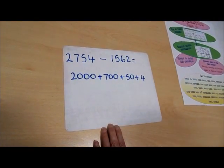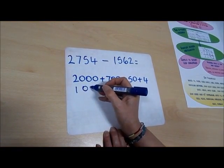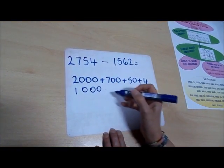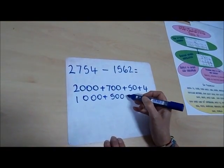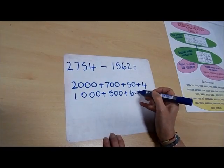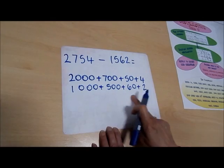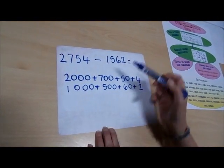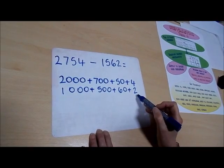We're going to do the same with this number. So it's 1000+500+60+2. So that's what this number looks like when it's partitioned into its thousands, hundreds, tens, and units.